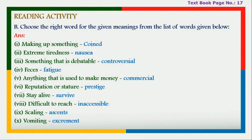Next, reading activity, textbook page number 17: choose the right word for the given meanings from the list below. 'Making up something' — coined. 'Extreme tiredness' — fatigue. 'Something that is debatable' — controversial. 'Faces' — answer: fatigue. 'Anything that is used to make money' — commercial. 'Repetition or stature' — prestige. 'Stay alive' — survive. 'Difficult to reach' — inaccessible. 'Scaling' — essence.